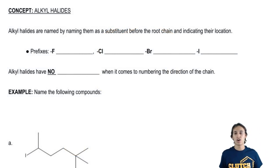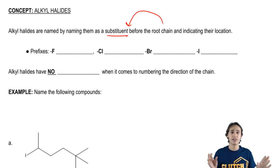So alkyl halides are simply named by adding them as a substituent before the root chain indicating their location. So what that means is that, remember at the beginning of this lesson we talked about substituents and modifiers. Alkyl halides don't have modifiers. They're just called substituents just like an alkane would be, like an alkyl or whatever.